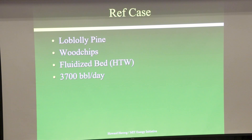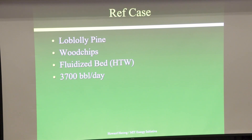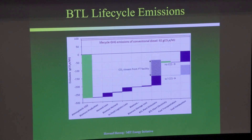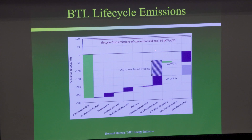I'm going to show you one thing. We did a reference case using a fluidized bed gasifier. We were using wood chips and the biomass we were using was loblolly pine — used a lot in the literature — which is a fast-growing tree. The size we were doing was 3,700 barrels of liquid fuel a day. I wanted to show the carbon balance when you look at these processes. This axis is grams of CO2 per megajoule. Conventional diesel has 92 grams of CO2 per megajoule.